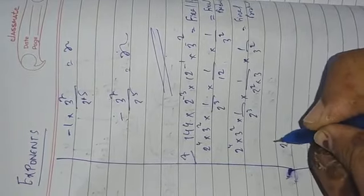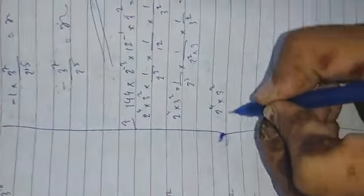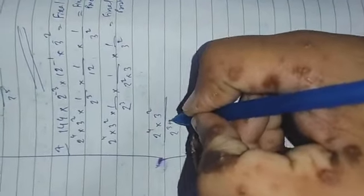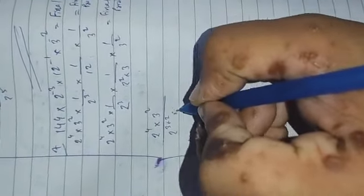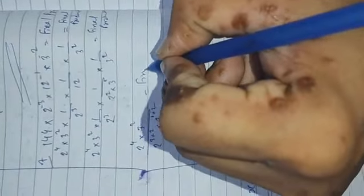Now you will get this expression. Here multiplication is given, so you have to sum the powers: 3 plus 2, and for the base 3: 1 plus 2. That is 1 plus 2. So here is the final product after summing up those powers.